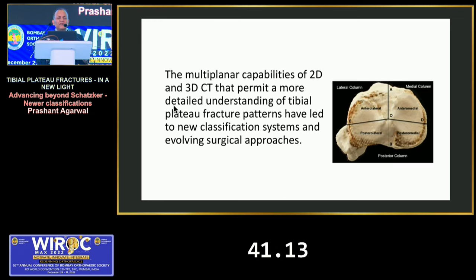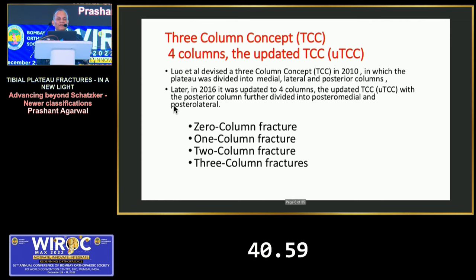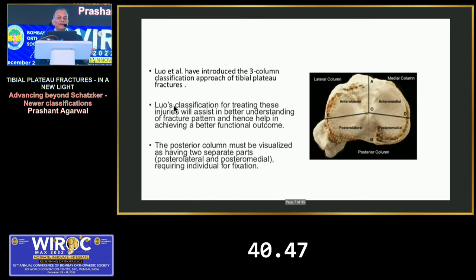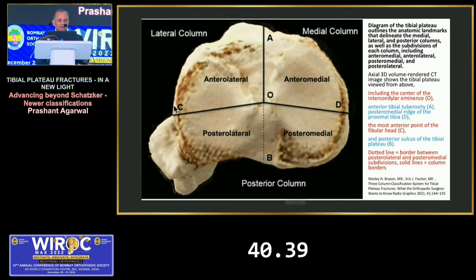This is an image of a proximal tibia constructed from CT scan where a three-dimensional picture is made, and the fracture involvement can nicely be visualized. Luo has classified the tibia into 3 columns, later modified into 4 columns: anterior, medial, lateral, and posterior. The posterior was then divided into posteromedial and posterolateral. This is to have information about the fracture lines, which can be visualized by dividing the 3D CT image into various quadrants.